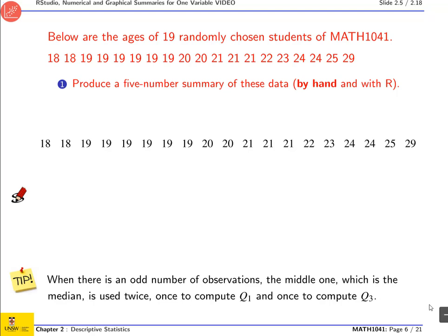So counting one through nine on each side, nine numbers there, nine numbers there. And that's my median, which is also the second quartile.